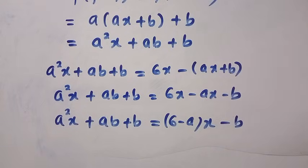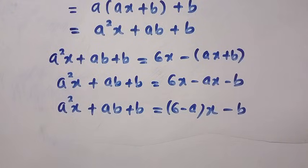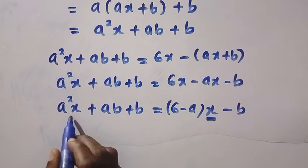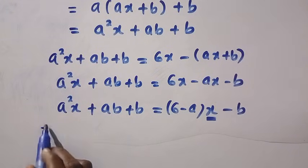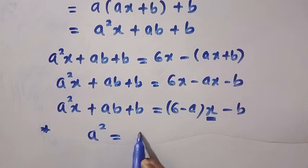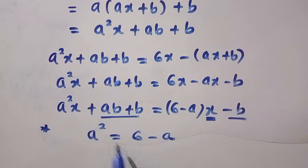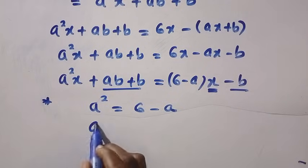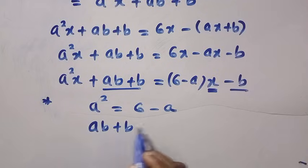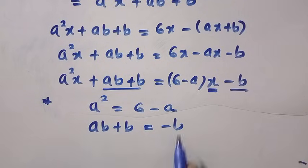From here, we have a squared x plus ab plus b equals, if I take out 6 minus a in bracket, we have x, then minus b. Next is to do the comparison of coefficients. This shows that a squared will be equals 6 minus a. And we will consider the constant as well: ab plus b equals minus b.